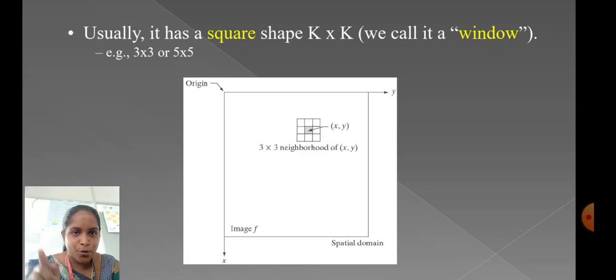Consider this, we can have a whole image F in a Spatial Domain. Here, we have X and Y axis for the image, also we have an origin. This K cross K, this matrix 3 cross 3, it shows the 3 cross 3 neighborhood of X, Y. A sample X, Y pixel is shown here. The 3 cross 3 neighborhood of X, Y is also plotted here.